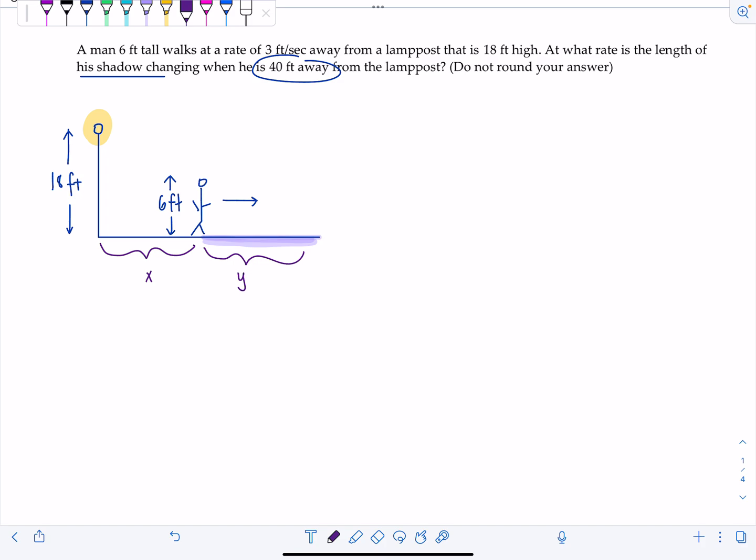At what rate is the length of his shadow changing when he is 40 feet away from the lamppost? We have two distances that are changing here: the distance that he is away from the lamppost and the length of his shadow. I'm going to call X the distance that the man is from the lamppost, and Y is the length of his shadow.